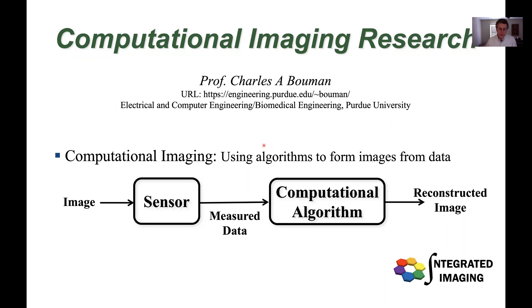Computational imaging is an area which has become fairly popular in the last few years, but it's been around for quite a long time. The idea is that you have some image you'd like to sense and you have a sensor, but then you need to take the data out of that sensor and use algorithms and computation to turn it into an actual reconstructed image.